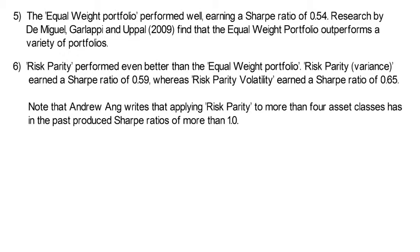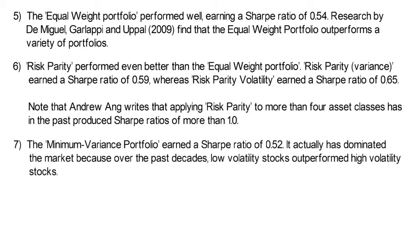Risk parity based on volatility earned a Sharpe Ratio of 0.65. It's useful to note that Andrew Ang writes that applying risk parity to more than four asset classes has in the past produced Sharpe Ratios of more than 1.0. The seventh takeaway was that the minimum variance portfolio earned a Sharpe Ratio of 0.52. It has actually dominated the market because over the past decades low volatility stocks outperformed high volatility stocks.